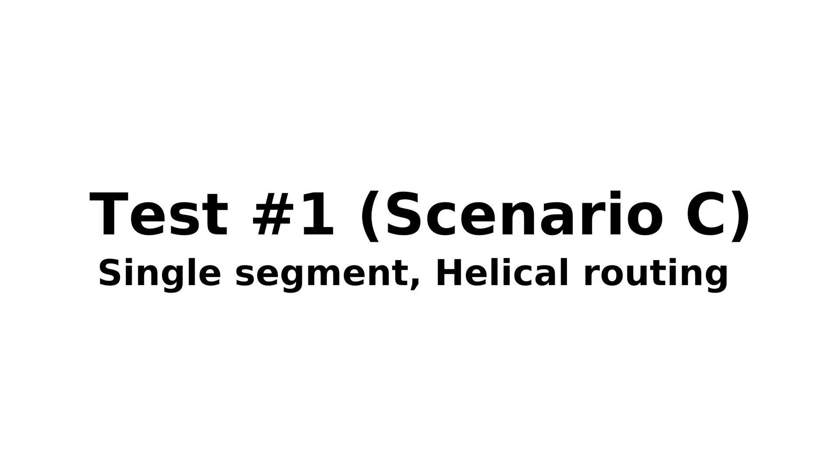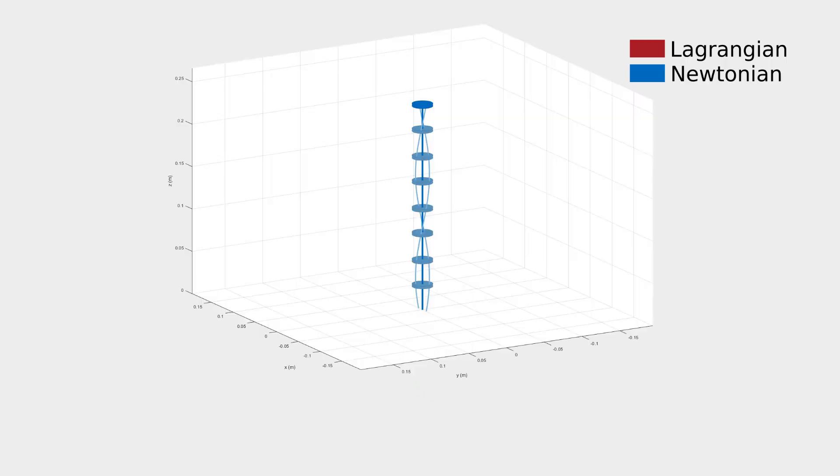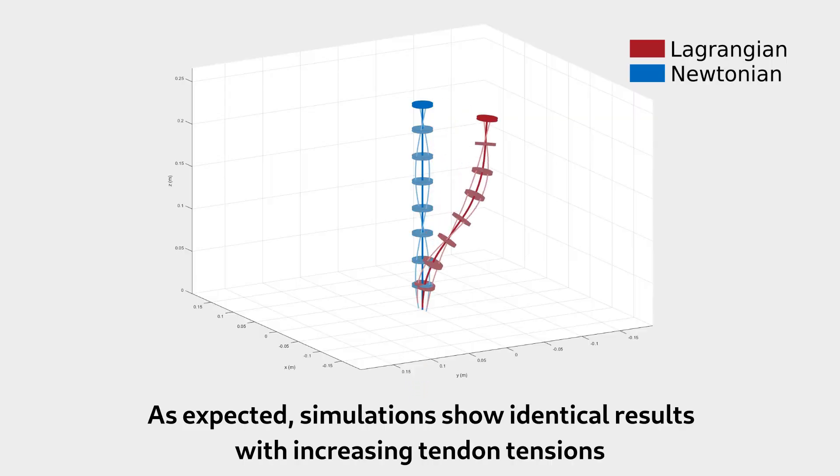Test 1, Scenario C: In this scenario, tendons are routed helically over a single section. As expected, simulations show identical results with increasing tendon tensions.